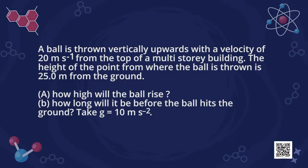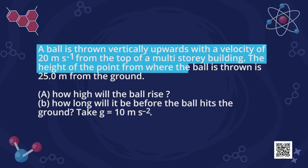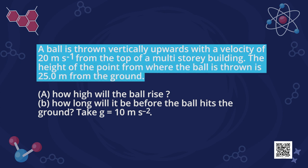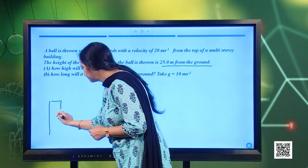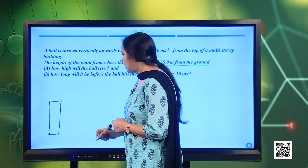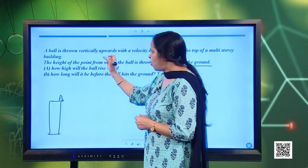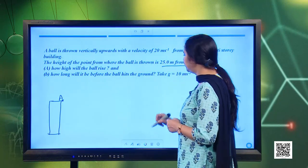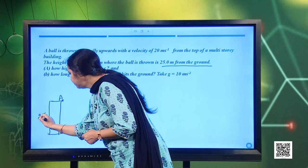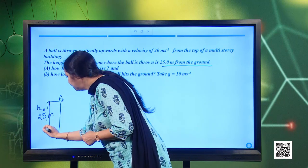Let us take one example. Suppose a ball is thrown vertically upwards with a velocity of 20 meter per second from the top of a multi-storey building. The height of the point from where the ball is thrown is 25 meters from the ground. Consider this point as point A at the top of the building, and the height of the building h0 is 25 meters.